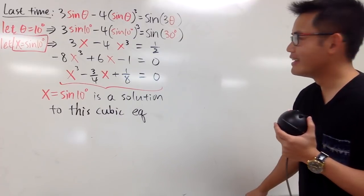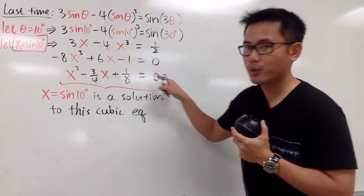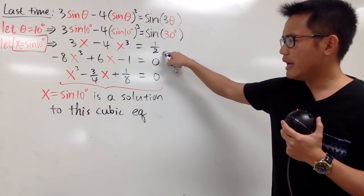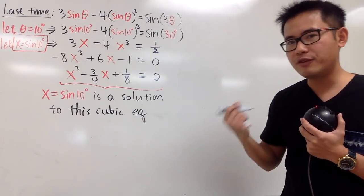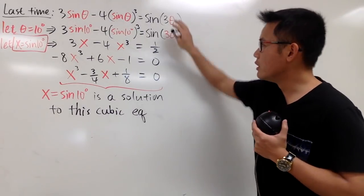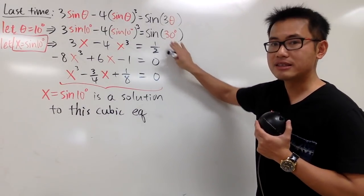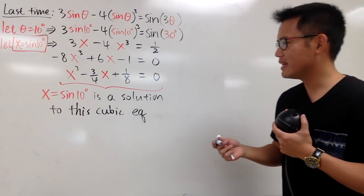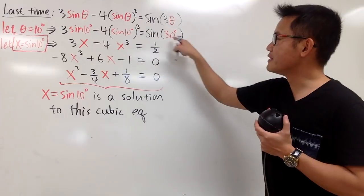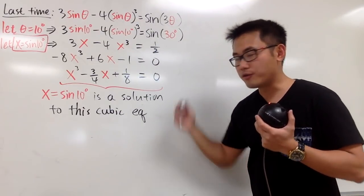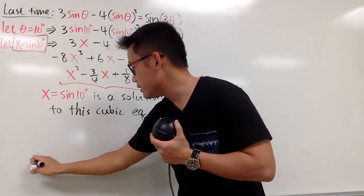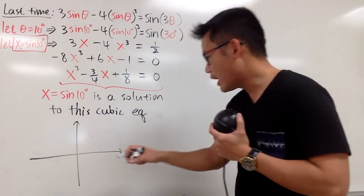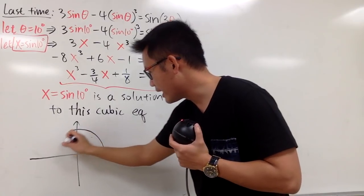Here's the connection. In order for us to end up with this nice equation, we needed sine of 3θ equal to 1/2. Is it possible to find a different angle so that sine of that angle is also 1/2? If so, we can come up with different answers. Let's bring up our unit circle. We know sine is the y-value on the unit circle.